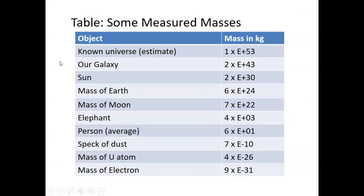Looking at some measured masses: the known universe is estimated at about 10⁵³ kg. Our galaxy's mass is roughly 10⁴³ kg. The Sun is about 2 × 10³⁰ kg, and the mass of Earth is 6 × 10²⁴ kg. The Moon is about 7 × 10²² kg, roughly 100 times smaller than Earth. An elephant is 4 × 10³ kg (about 4 tons), and an average person is about 6 × 10¹ kg, or 60 to 70 kg.